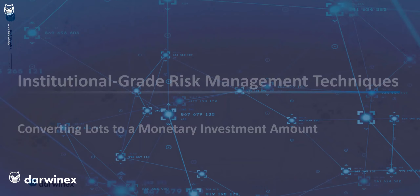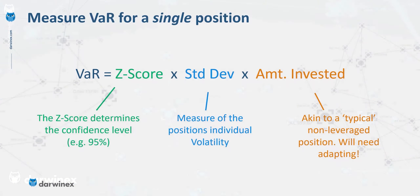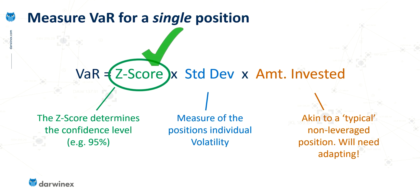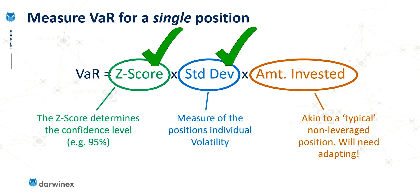We need to do this because of this third component in the value at risk formula. We've already covered the standard deviation and the Z-score, so this is the last remaining piece of the puzzle.